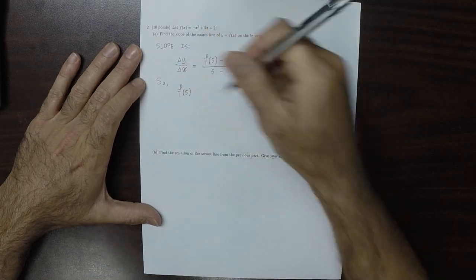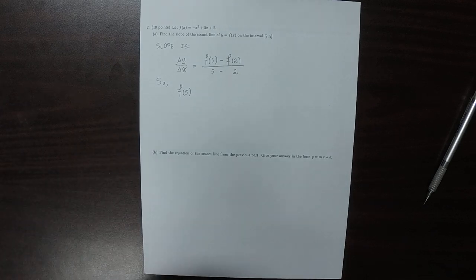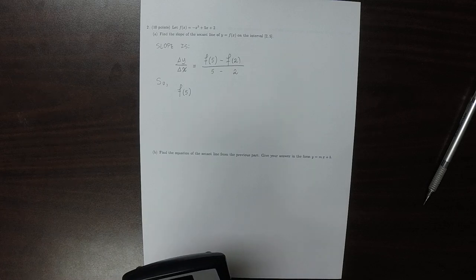f of 5, plugging in 5, that'd be negative 5 cubed plus 5 times 5 plus 2.